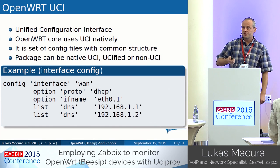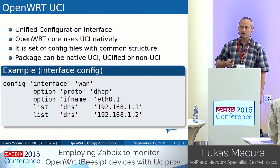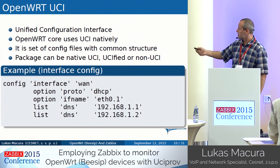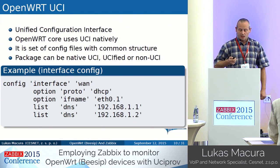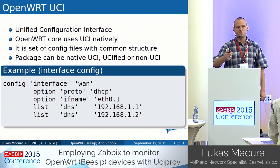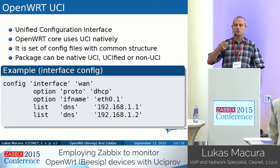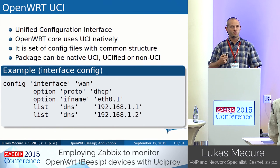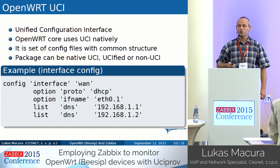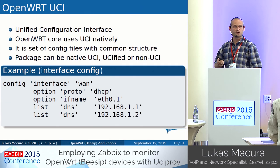OpenWrt uses the UCI interface which is really lightweight configuration, very easy for parsing. Each package can be native UCI - meaning it directly reads config from UCI - or it can be UCI-fied, meaning that during startup the application takes the config from UCI, parses it, and creates its own config. There's also non-UCI, but OpenWrt developers are not happy with non-UCI applications.